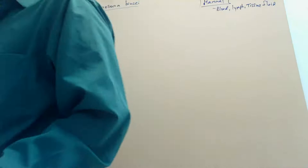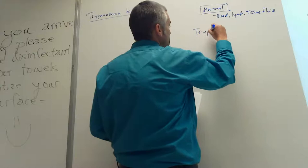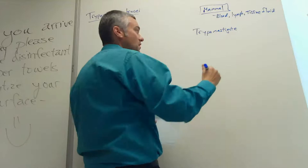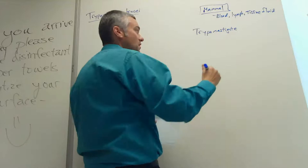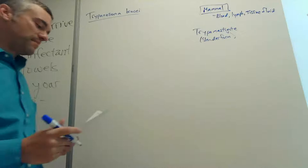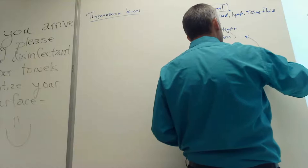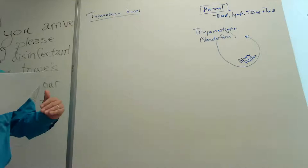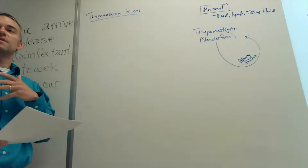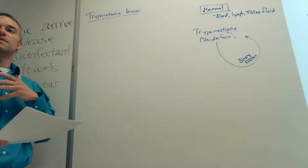Our infected insect bites our host and delivers trypomastigotes — specifically the slender form. In the slender form it replicates via binary fission to produce many more, replicating rather quickly. Our population size increases so much that there seems to be some sort of trigger that allows some of these slender-form trypomastigotes to start changing their shape.